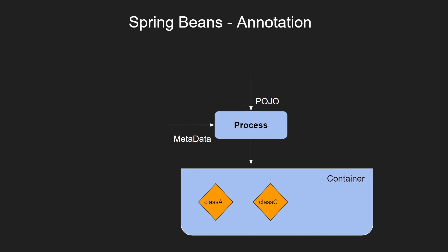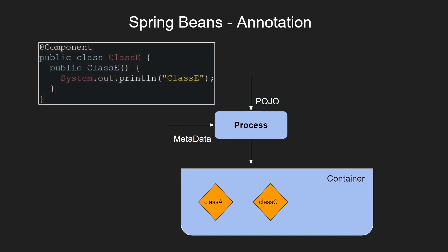In the annotation approach, we do not have separate information for POJO and metadata. Both pieces of information are present within the class itself. Here, class E is the POJO class and the @Component annotation provides the metadata information for processing. Once this is fed into the initializer, it creates an object of class E.